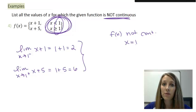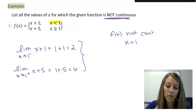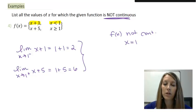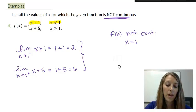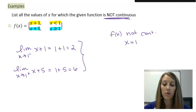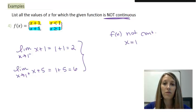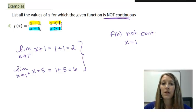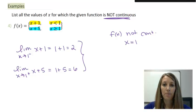We know the function is continuous everywhere else: for x less than 1, we have a polynomial function, and polynomials are continuous everywhere. For x greater than 1, we also have a polynomial, which is continuous everywhere. To summarize: play devil's advocate and figure out the tricky places — most likely where the denominator equals zero or where pieces of a piecewise function don't match up. In the next video, there's one more problem resembling your homework problems on continuous functions.